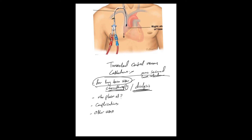Tunneled catheters are also used sometimes as a permanent dialysis catheter — as an alternative to the AV graft or shunt, or as a bridge until the AV graft or AV shunt matures. They can also be used if someone needs IV fluids or TPN chronically.